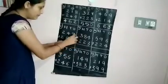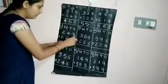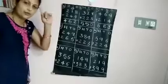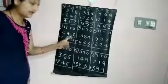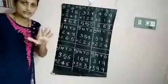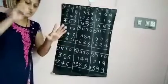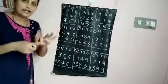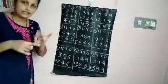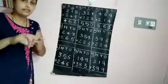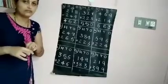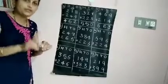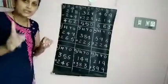7 plus 5. 7 in your mind, 5 in your hand. 7 after: 8, 9, 10, 11, 12. 1, 2 — 12.